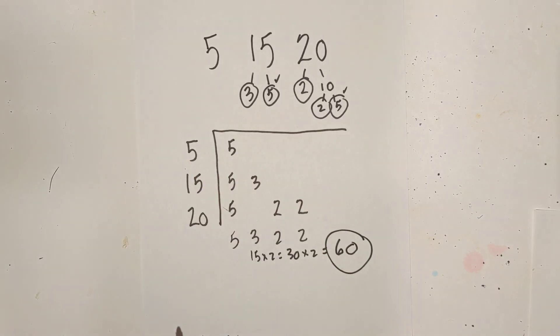So let's start doing that: 5 times 3 is 15 times 2 is 30 times 2 is 60. So the LCM of 5, 15, and 20 would be 60. Let's work another example.